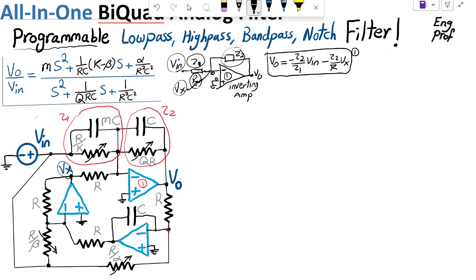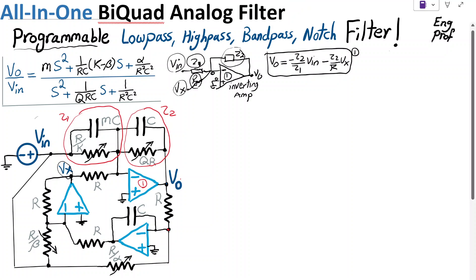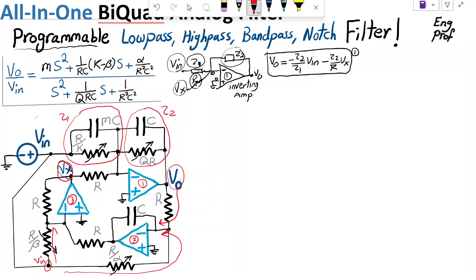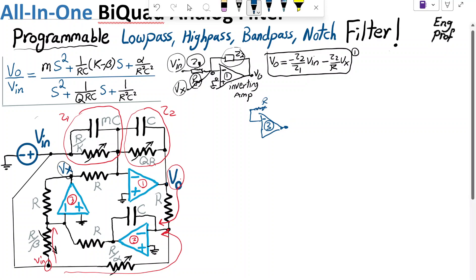The same analysis can be done for op-amp two and op-amp three. VX is the output of op-amp three. VN contributes via one route, VN also contributes via another route, and V_out contributes via another route. So for VX we have op-amp three at the output with VX. At the negative terminal of op-amp three we have a resistor R going to its output, and at the input via potentiometer R/β we are connected to VN, and via resistor R we are connected to op-amp two.